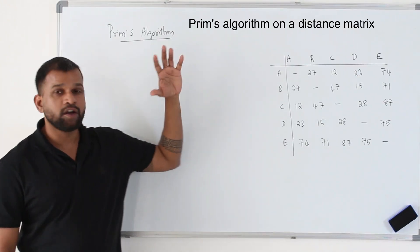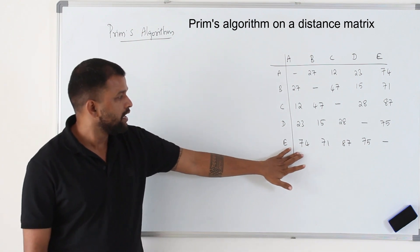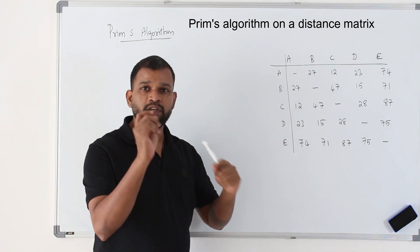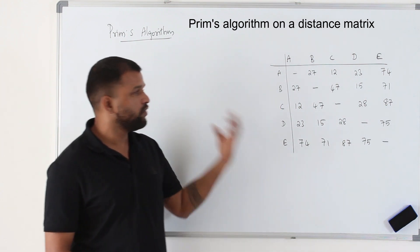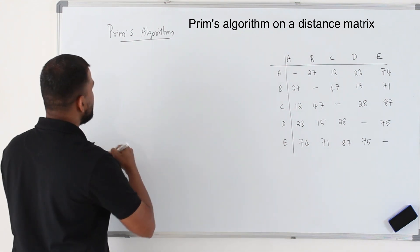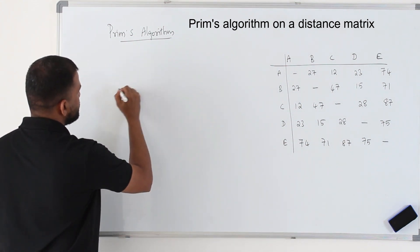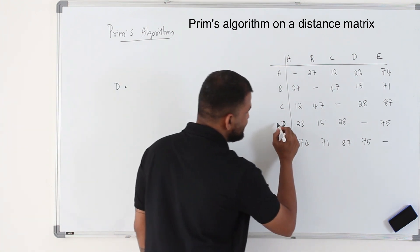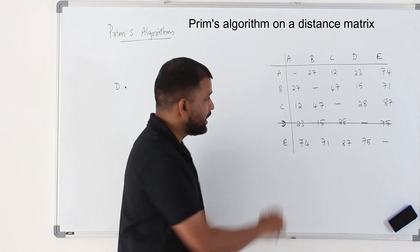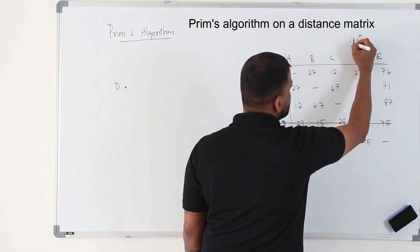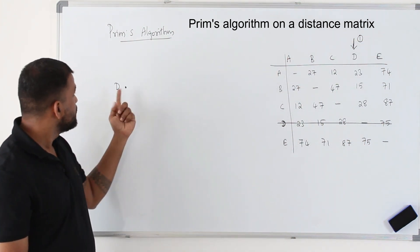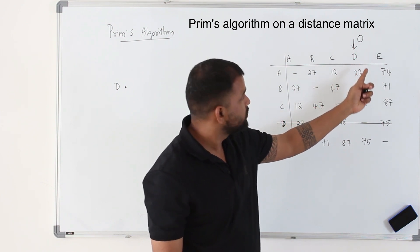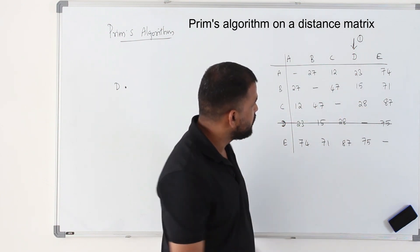Now I have one more distance matrix. Let's apply the algorithm here. The first step: you need to choose a vertex. If it's mentioned in the question, start from that particular vertex; otherwise, feel free to choose one. In this case I'm going to choose D as a random vertex. Put D as number 1. Delete this row and label D as number 1. In the column corresponding to the labeled vertex, look for the smallest number, which is 15. 15 is connecting B and D.